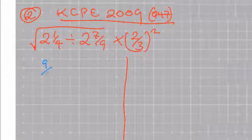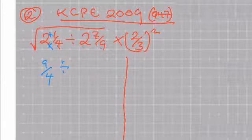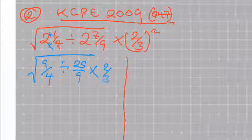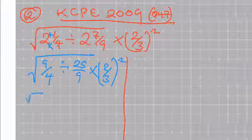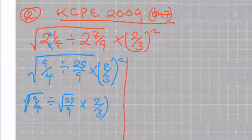2 and 1 over 4 is 9 over 4 — that is 2 by 4 plus 1. 2 and 7 over 9 is 18 plus 7, which is 25 over 9. Everything there is under the square root. Then I multiply by 2 over 3 squared. After doing that, split the square root for each of the numbers: that gives you the root of 9 over 4, divided by the root of 25 over 9, multiplied by the square of 2 over 3.